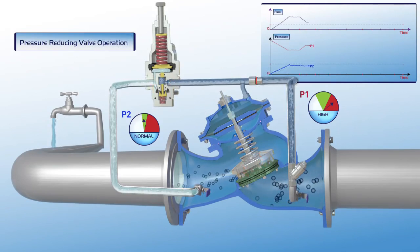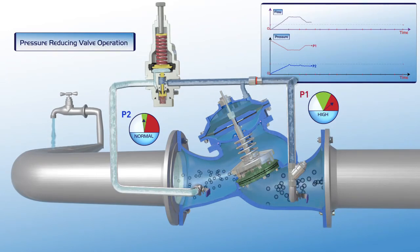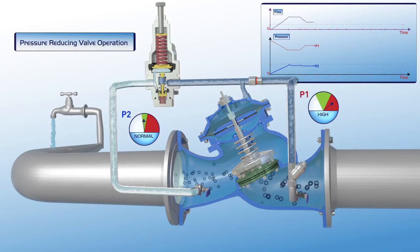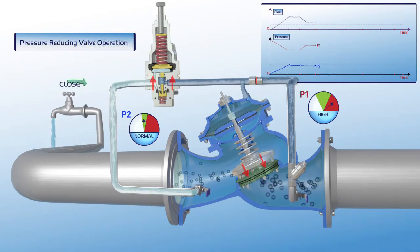The valve's operation stabilizes, and as shown on the chart, the downstream P2 pressure line remains stable during a drop in the flow, while the P1 upstream pressure increases.